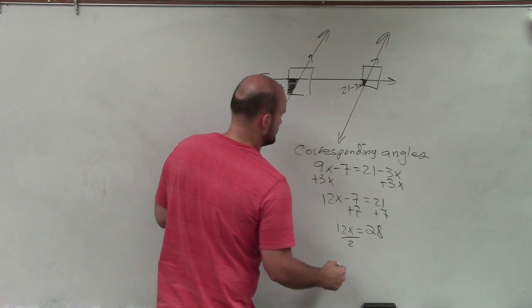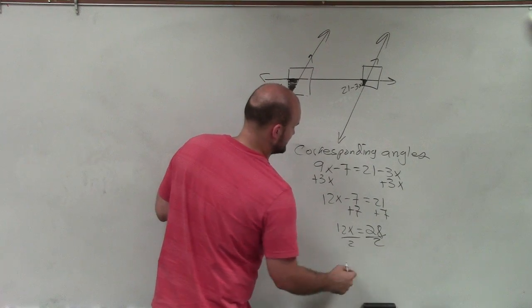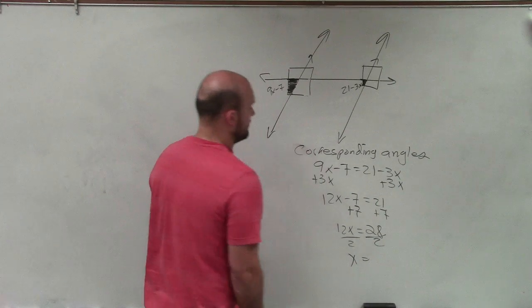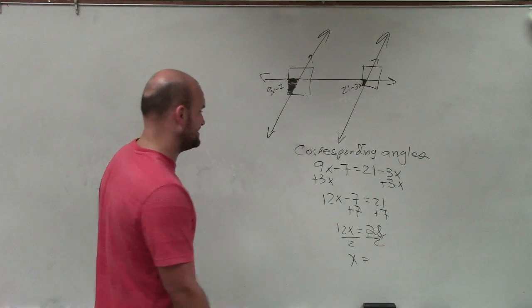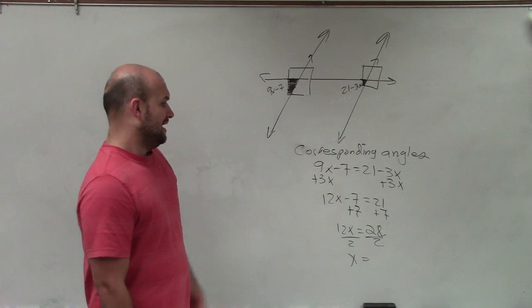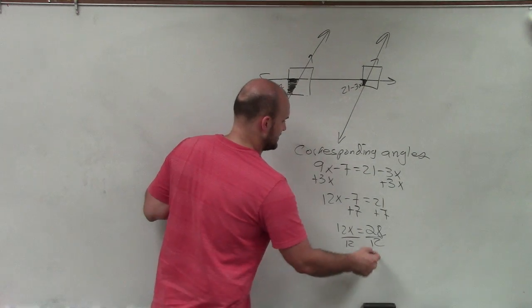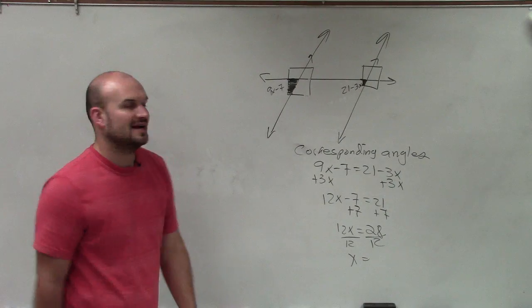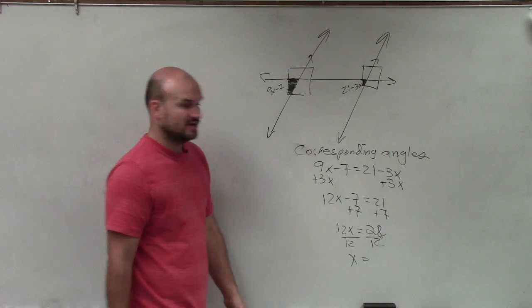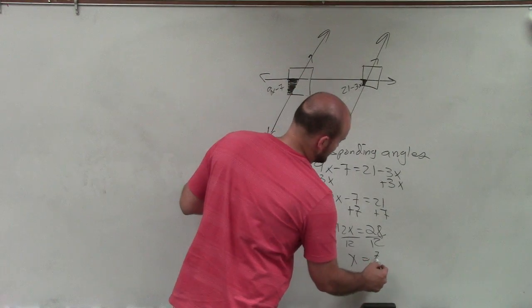Divide by 2, divide by 2, x equals, now I can't divide this, I can't get 2, oh, divide by 12, not 2, divide by 12. Well 12 does not evenly divide into 28, however 4 does, and when I do that I get 7 thirds.